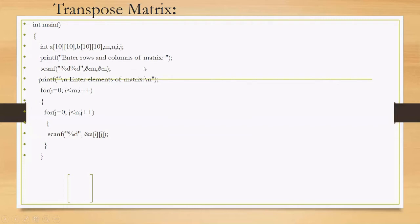Next we have a printf statement: 'Enter row and column of matrix' — this message is displayed on the output screen. After that, scanf takes input from the keyboard for row and column. I'm specifying m for row and n for column, using the %d format specifier since m and n are integers. My input is a 2×2 matrix, so I enter 2 for both row and column.